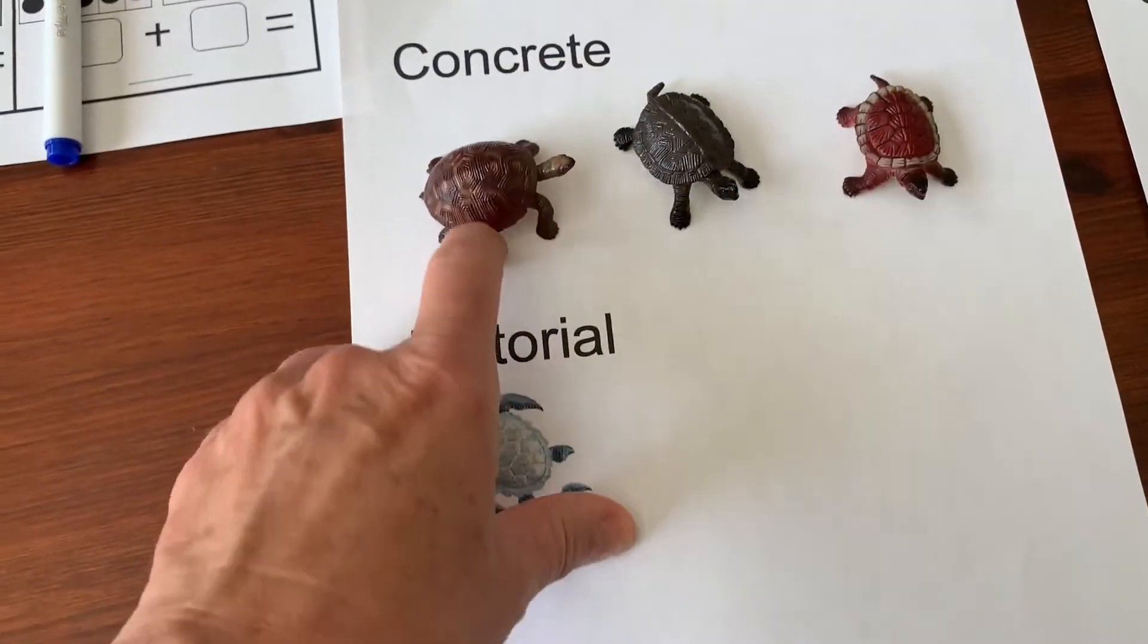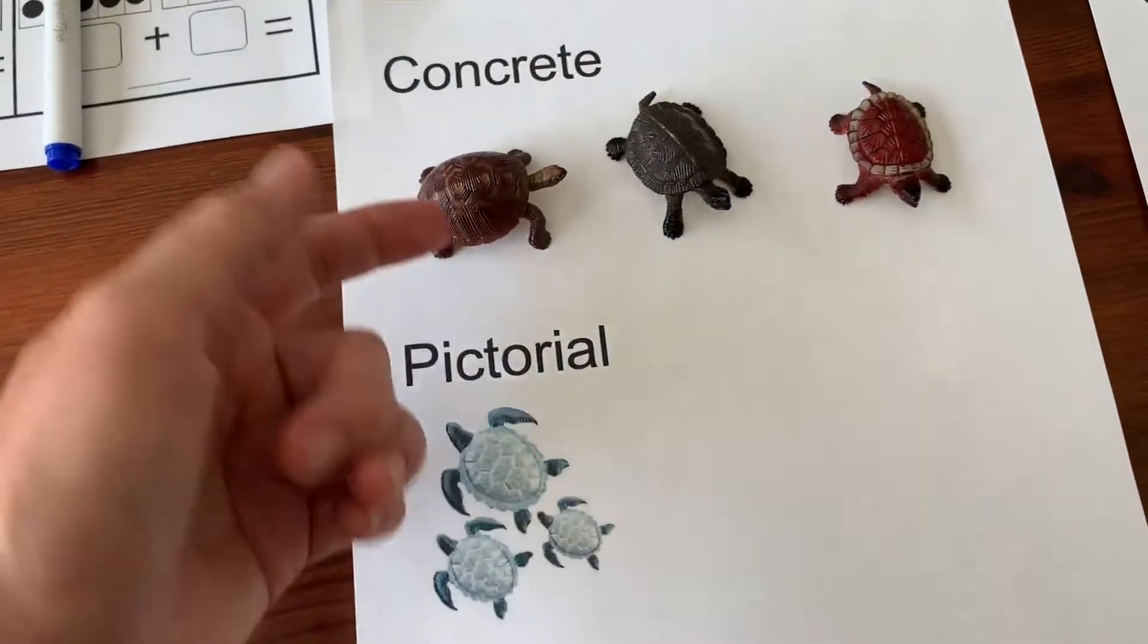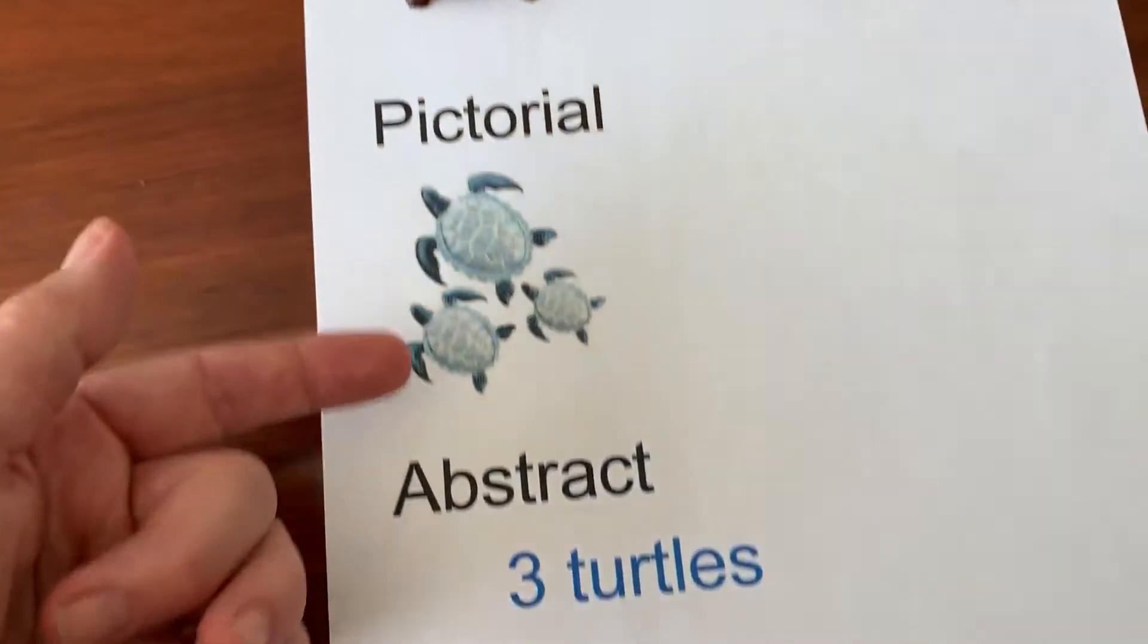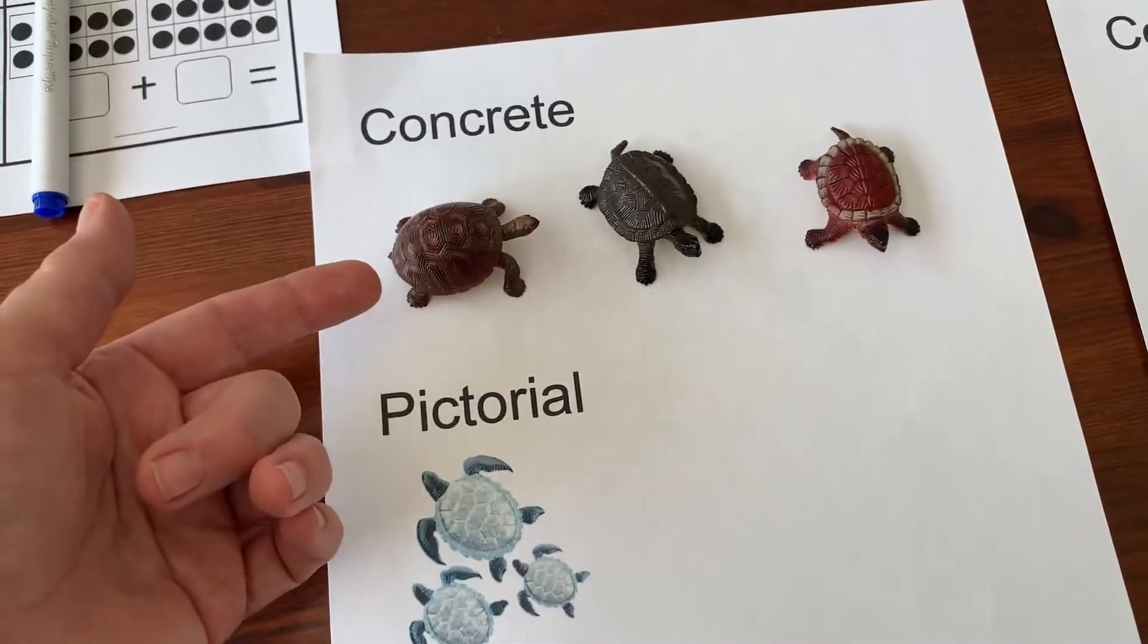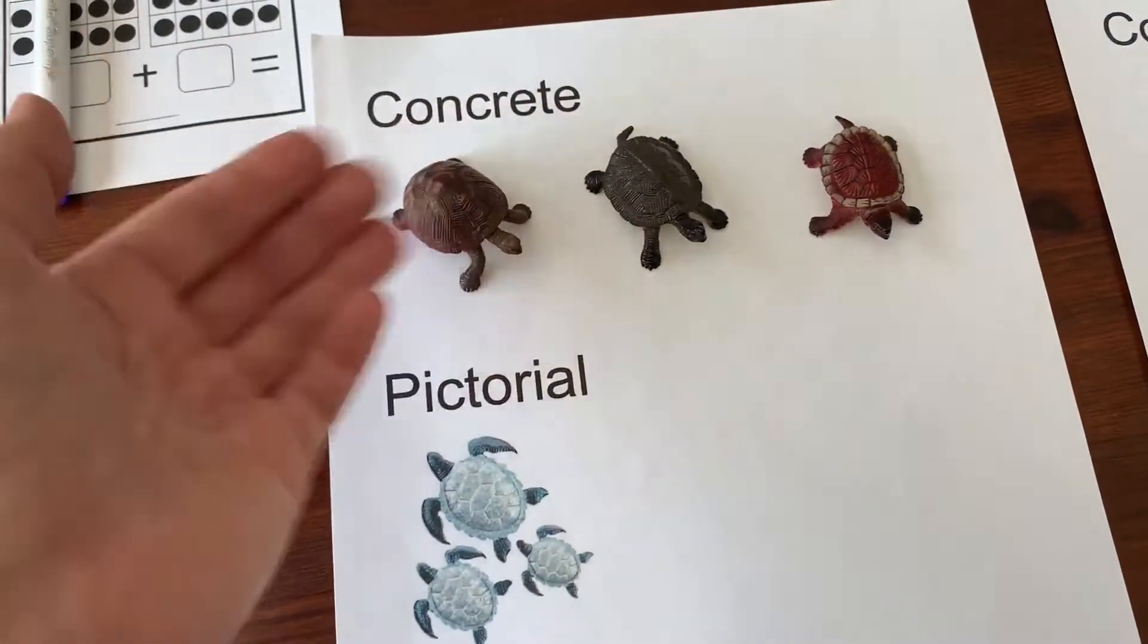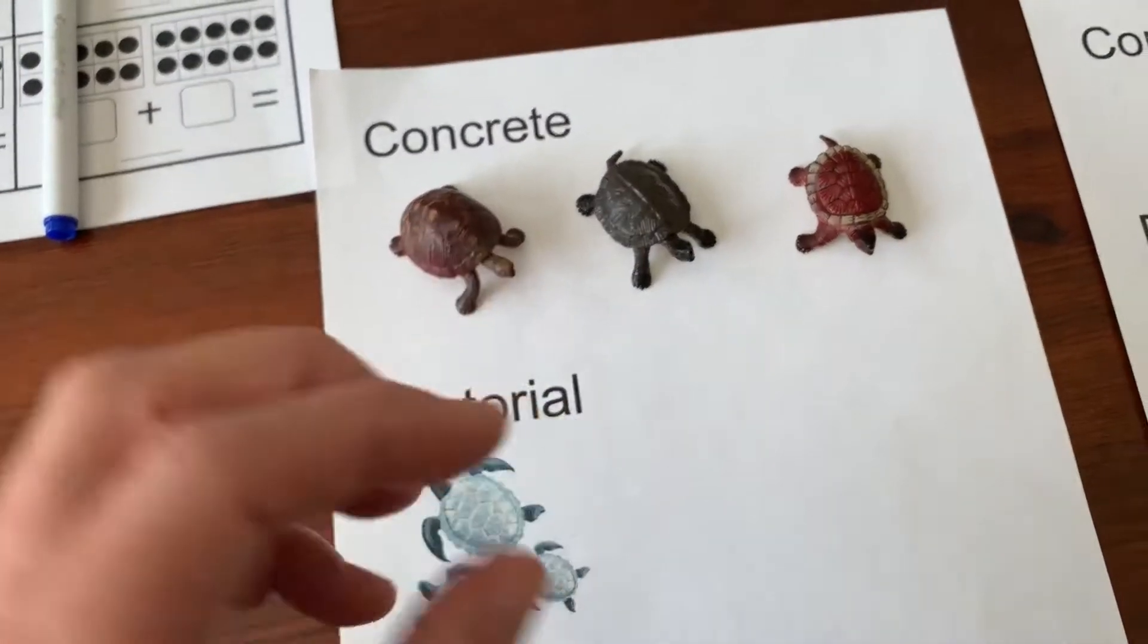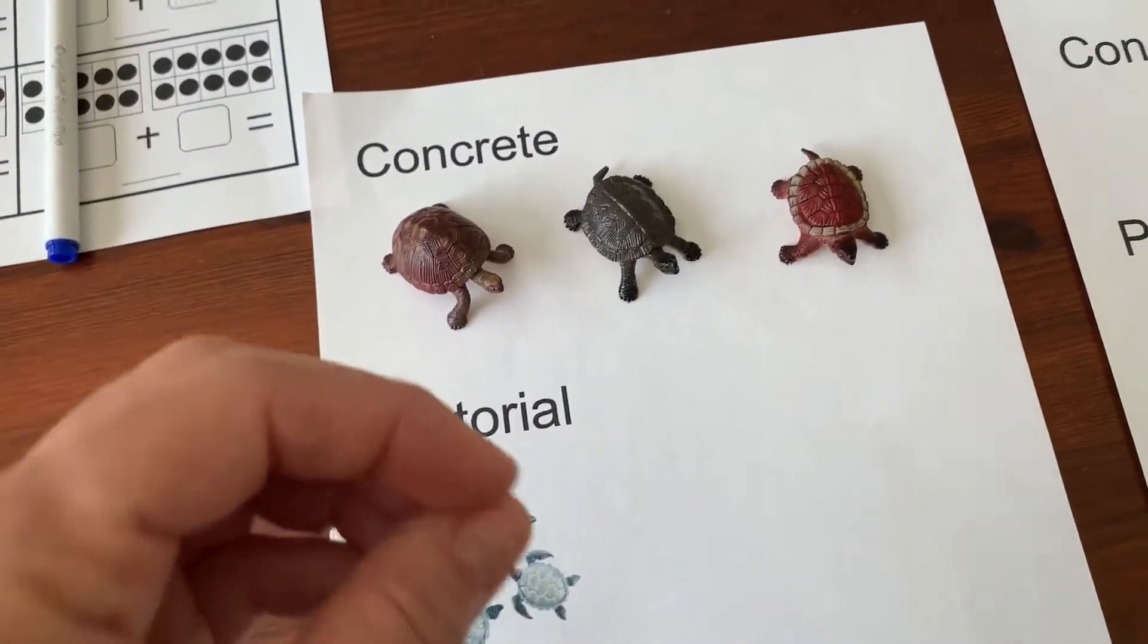We always go from concrete, then we add pictorial alongside the concrete, and then we add the abstract alongside the pictorial alongside the concrete. Don't be hasty to take away the concrete. Let the students have the concrete as long as they want them.